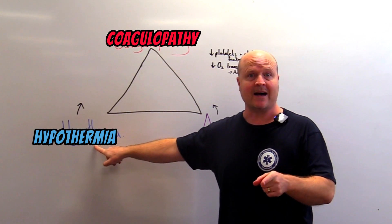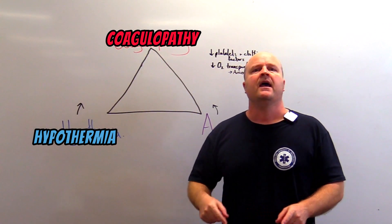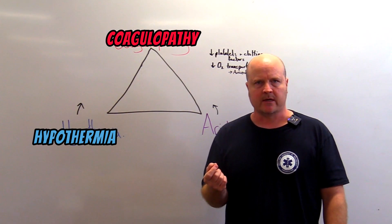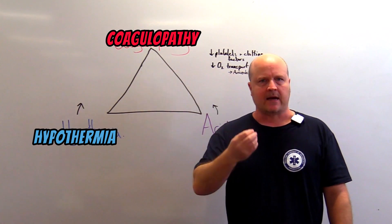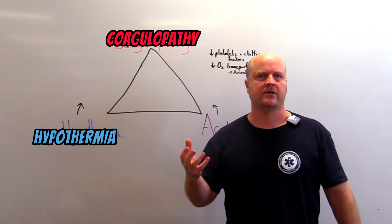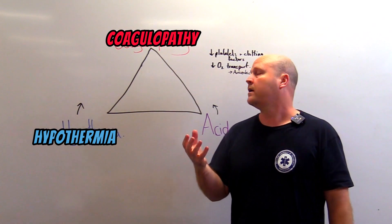Hypothermia. That's gonna make it harder for us to clot again and it also has some nasty byproducts like lactic acid which breaks apart into lactate and hydrogen and this is gonna make us more acidic.